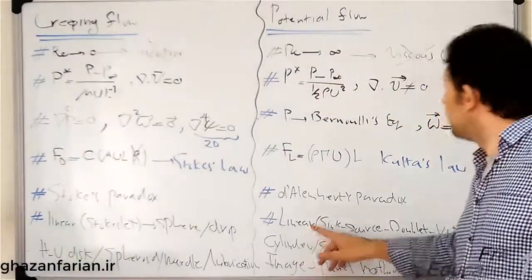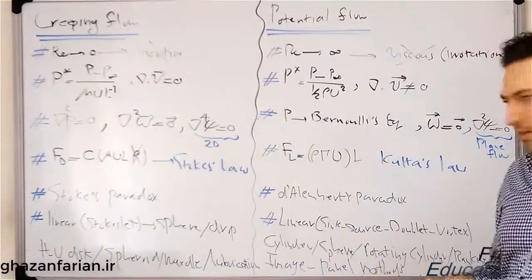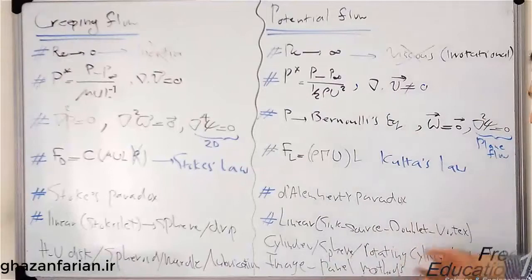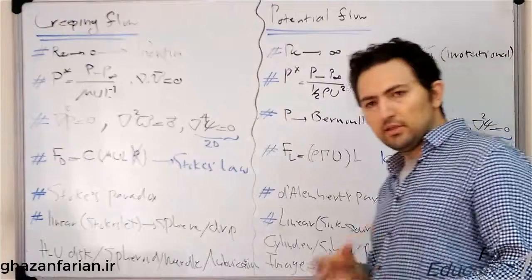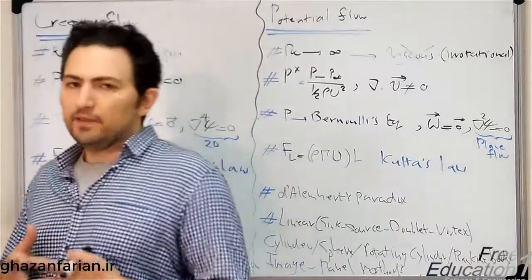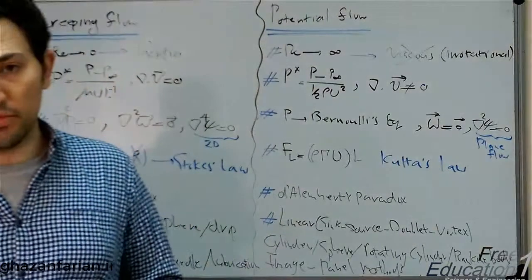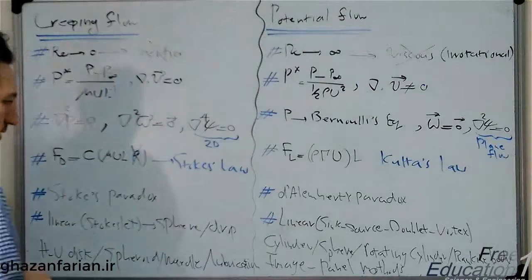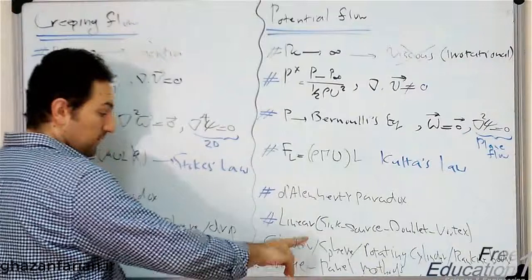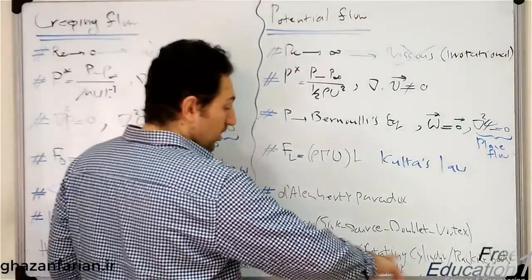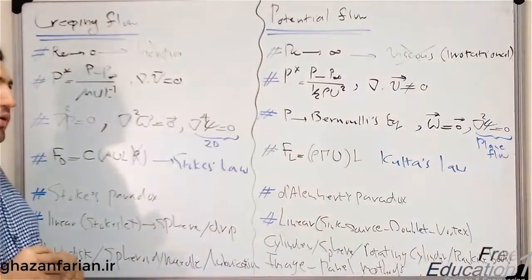Here in potential flow we have elementary solutions or basic solutions, which are source, the doublet, or the point vortex, or the uniform flow. You can combine the solution of these elementary flows to obtain potential flow solutions for any arbitrary field. Some important and well-known solutions of the potential flow are potential flow over cylinder or over a sphere, over rotating cylinder, or over Rankine body or Kelvin's oval, and image method, panel method are very important in this kind of flow.